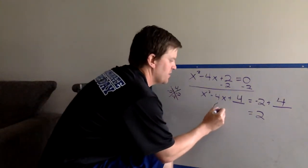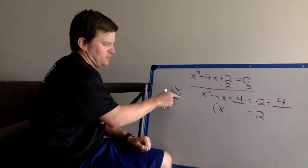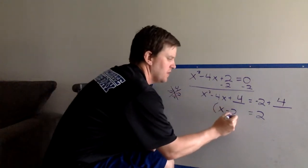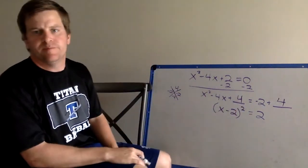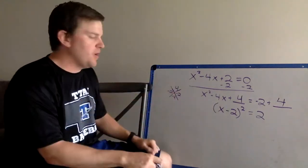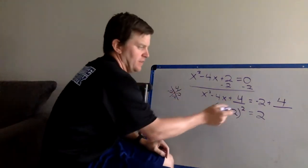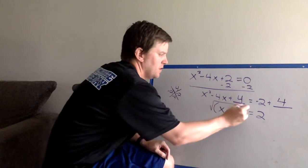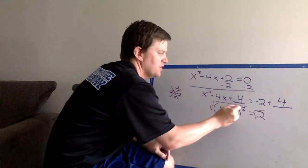So if we were to write this in factored form, it's x minus 2 squared. And then we're back to our old problems. Solve for x. The negative 2's trapped. Let's untrap it by square rooting both sides.